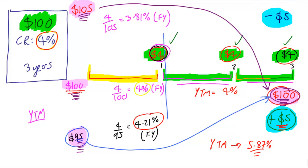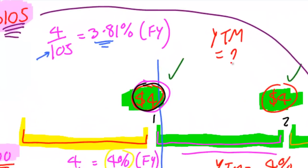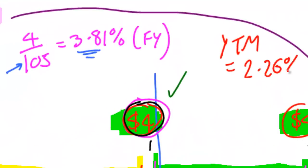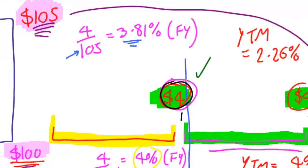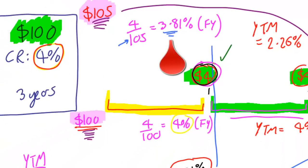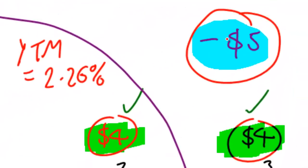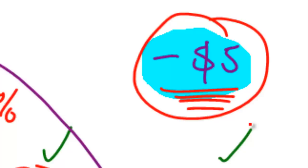Now the flat yield took it into a little bit of account because, you know, dividing 4 by 105 gives us 3.81%. But we'll see later on that the yield to maturity has really taken a hit here. The yield to maturity in this case is 2.26%. You know, it's really dropping down. Coupon rate 4%, flat yield 3.81%, yield to maturity 2.26%, taking into account this loss of $5.